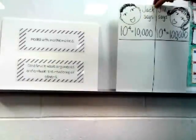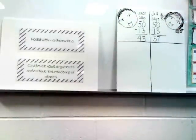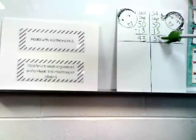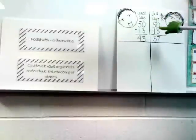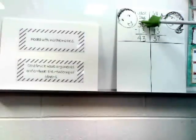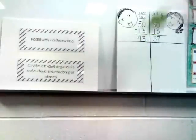Here's another example with borrowing, which is a very common skill for 2nd and 3rd graders. Jack says 50 minus 13 is 43. Jill says 50 minus 13 is 37. Jack has made a common error — he said 3 minus 0 is 3, and 5 take away 1 is 4. It doesn't matter who's right, Jack or Jill — you want to vary it up.